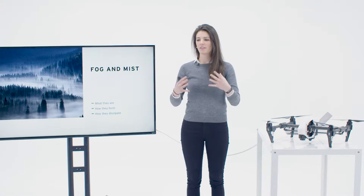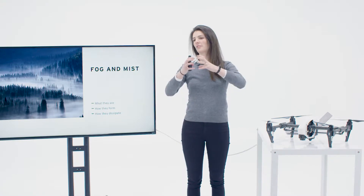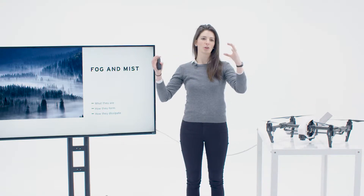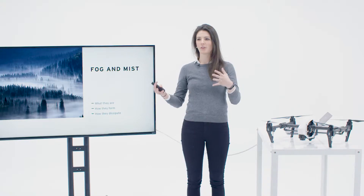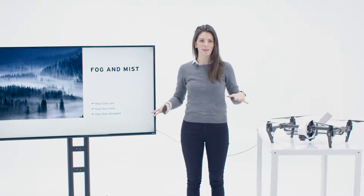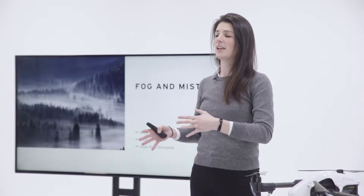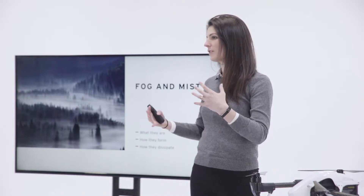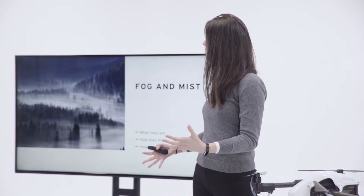So instead of having moist air that's being brought up to an altitude where it's able to condense and cool and turn into a cloud, there's some sort of cooling process that's happening at ground level that's making that happen. And fog is actually named for whatever that cooling process ends up being.